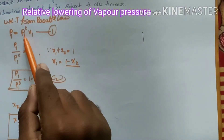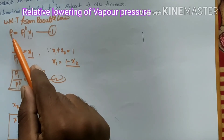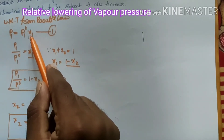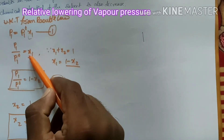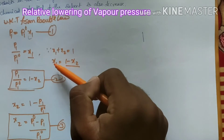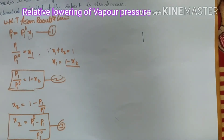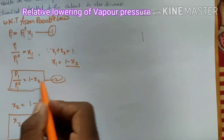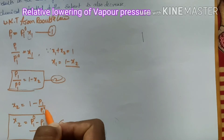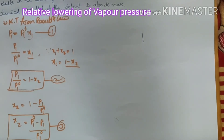To summarize: from Raoult's Law, p₁ = p₁⁰ × x₁, so p₁/p₁⁰ = x₁. Since x₁ + x₂ = 1, then x₁ = 1 − x₂. Substituting: p₁/p₁⁰ = 1 − x₂, so x₂ = 1 − p₁/p₁⁰, which gives x₂ = (p₁⁰ − p₁) / p₁⁰. This is equation 3.